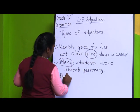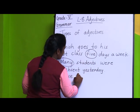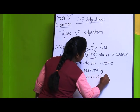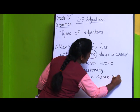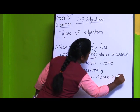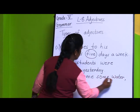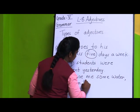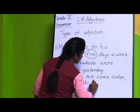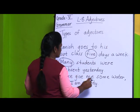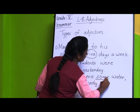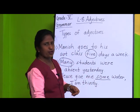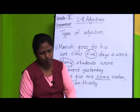Fifth sentence: 'Please give me some water.' If you ask 'how much water,' the answer is 'some water.' You would not ask 'how many water.' So here 'some' is adjective of quantity — you underline it.